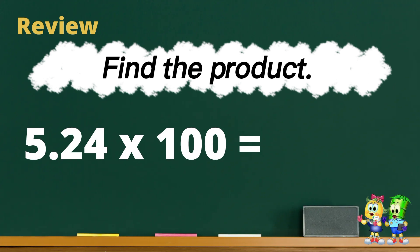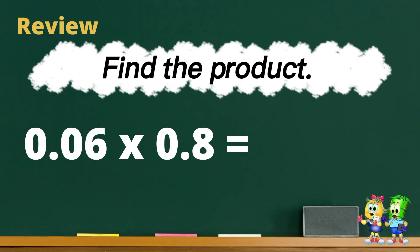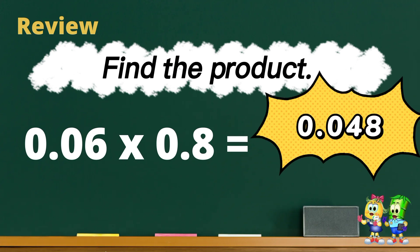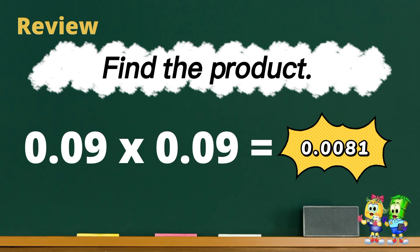Try this one: five and twenty-four hundredths times one hundred — the answer is five hundred. Next, we have six hundredths times eight tens. The answer is forty-eight thousandths. How about nine hundredths times nine hundredths? The answer is eighty-one ten-thousandths.